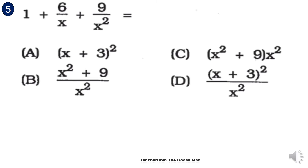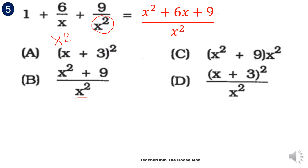Given 1 plus 6 over x plus 9 over x squared. Looking at the choices, we have a denominator of x squared, giving us a hint for our denominator. I'll extract the LCD of 1, 6 over x, and 9 over x squared. Since x and x squared are the variables, the LCD is x squared as it has the highest exponent. I'll transform this into x squared plus 6x plus 9 all over x squared.